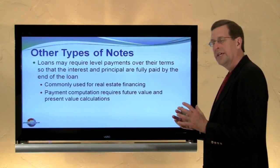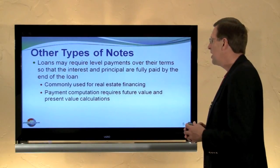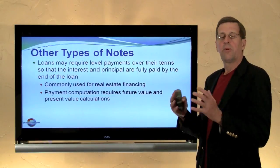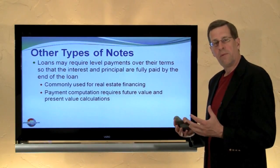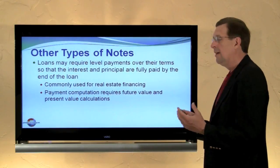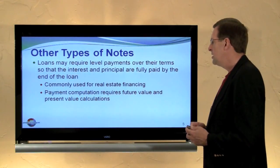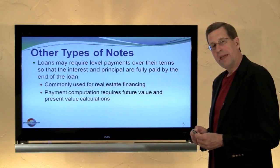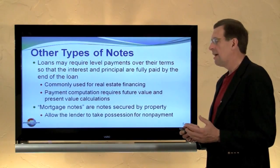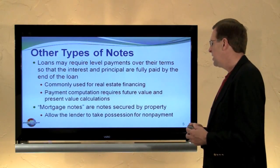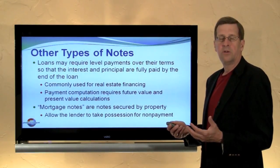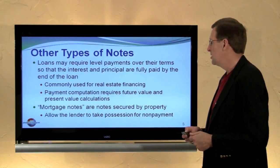In contrast to the term note illustrated, other notes may involve payments over the life of the note so that principal and interest are paid uniformly over the borrowing period, and at the end of the note's life it will have been fully paid off. These are commonly used for real estate transactions. Sometimes these notes are called mortgage notes because the property secures payment — if the borrower doesn't pay, the lender can take back the real estate.